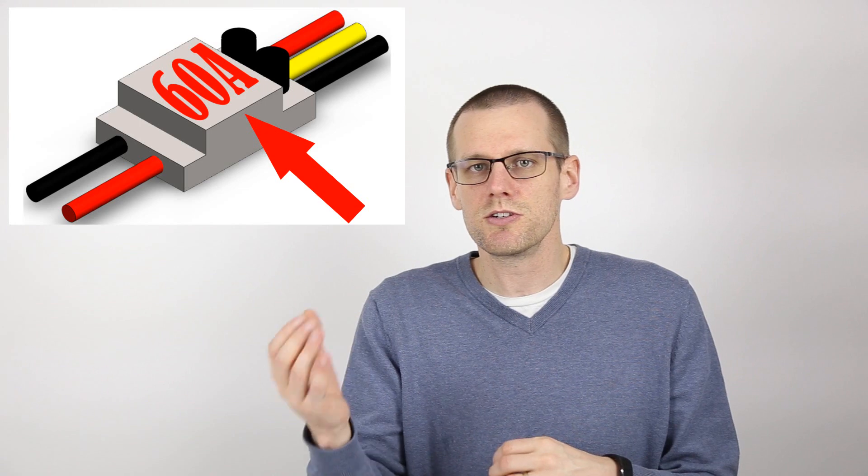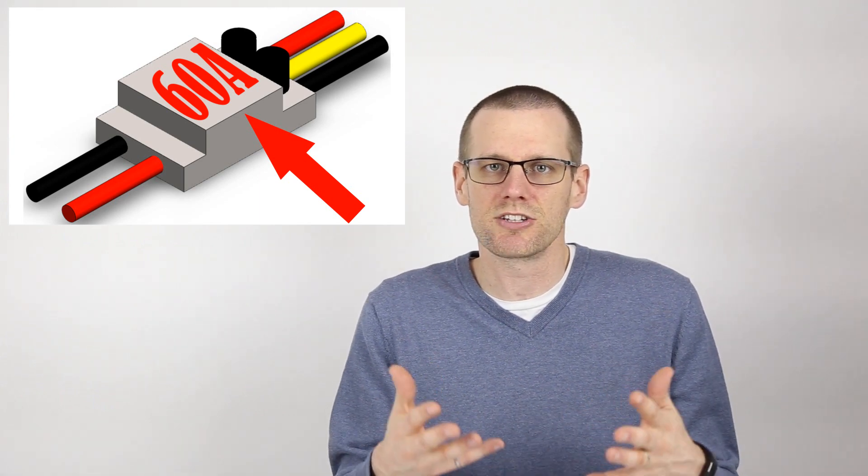Now let's move on to our second point which talks about the maximum continuous current rating that is on a speed control. This is typically what you will find on the label of the speed control in big numbers. All speed control manufacturers use this because it's a very important number for us to know. Now the big thing here is what does it actually mean to us? If we see a 60 amp rating on a speed control, does that mean it can actually sustain 60 amps continuous? Well, the quick answer to this is not necessarily.